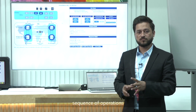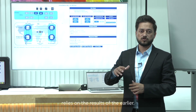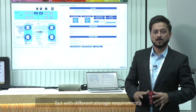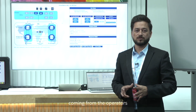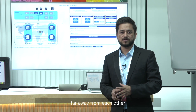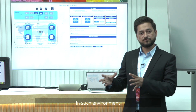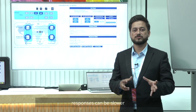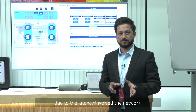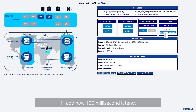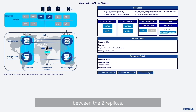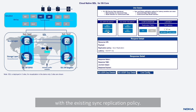However, with different storage requirements coming from operators where data centers are located far apart and can have higher WAN latencies up to 250 milliseconds between replicas, sync replication responses can be slower due to the latency involved in the network. For example, I will now add 100 milliseconds of latency between the two replicas and run the same request again, so you will see that responses will become slower with the existing sync replication policy.